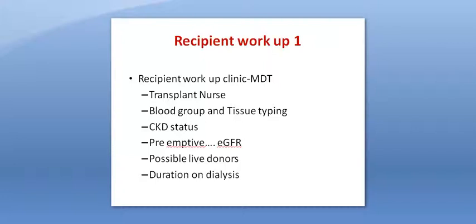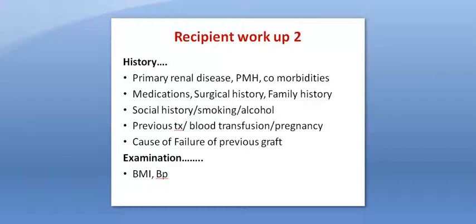Some centers have a larger multi-disciplinary team than others, which could include cardiology and vascular and transplant surgeons. An essential member of the team is the transplant nurse, who should meet the potential recipient first, take blood group samples for blood group and tissue typing, assess the CKD status, and if the patient is on dialysis, the duration of dialysis. Pre-emptive transplantation should be encouraged for pre-dialysis patients. Possible live donors should always be asked about and considered. Assessment should include taking a detailed history from the recipient, including the primary renal disease.